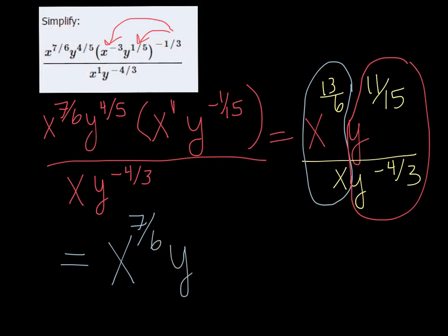And then 11 fifteenths minus a negative four-thirds. Be careful here. When you subtract a negative, what you're really doing is adding. So remember the quotient rule says you subtract, but the negative four-thirds is negative. So you subtract a negative, change it to positive. And you should come up with 31 fifteenths.